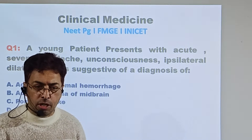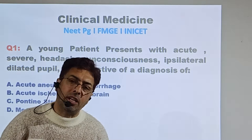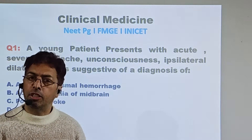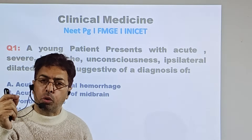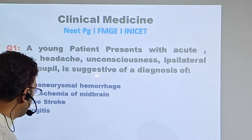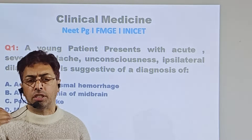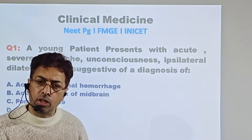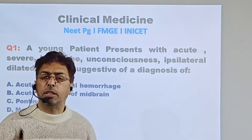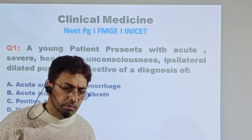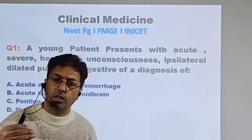First, the patient's age — that's important. Second, 'acute severe headache' — the presentation is headache which is acute and severe. These are all very important points, so you have to focus and take each point of the question into account. Ipsilateral dilated pupil is the next key finding. From a severe infection of the brain, severe hemorrhage, or acute vascular accident — the options are: acute aneurysmal hemorrhage, acute ischemia of midbrain, and pontine stroke.